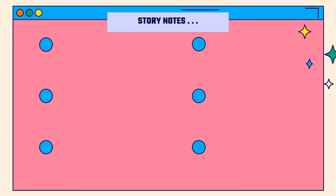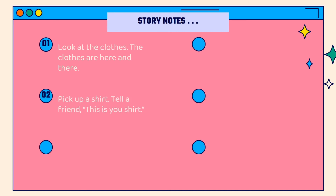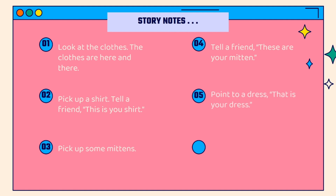Here are the story notes. Look at the picture. Number one: look at the clothes — the clothes are here and there. Two: pick up a shirt, tell a friend 'This is your shirt.' Three: pick up some mittens. Four: tell a friend 'These are your mittens.' Five: point to a dress — 'That is your dress.' Six: point to some shoes, tell a friend 'Those are your shoes.' What color are the clothes? Good job!